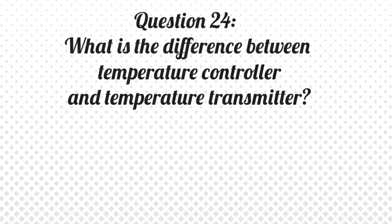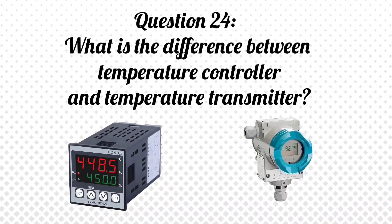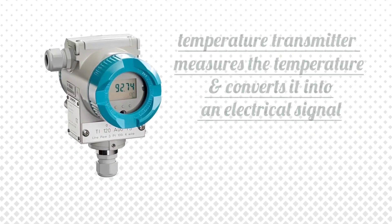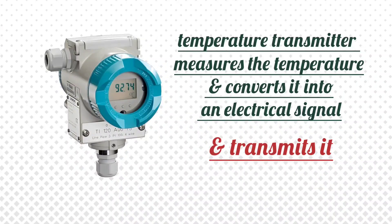Question 24: What is the difference between a temperature controller and a temperature transmitter? Answer: The temperature controller controls the temperature of a process, while the temperature transmitter measures the temperature, converts it into an electrical signal, and transmits it.